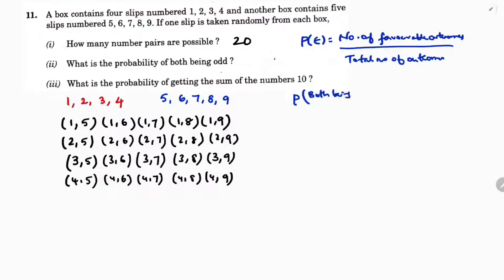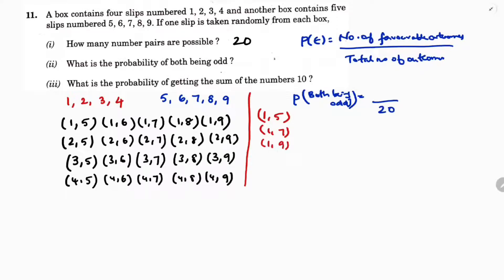For both being odd numbers: one is odd, five is odd — so (1,5) is favorable. Then (1,7) and (1,9) also work. In the second group everything starts with two, which is even, so none qualify. In the third group: (3,5), (3,7), (3,9) — so total six favorable possibilities.